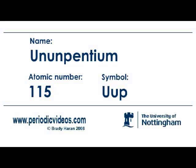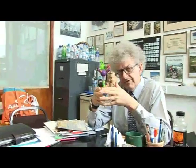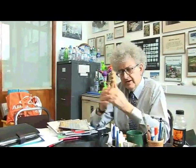Element ununpentium — that's element 115 — is in the same group of the periodic table as nitrogen, phosphorus, antimony and arsenic. And so we can, even without knowing or seeing a real sample, tell quite a lot about what the chemistry might be like.